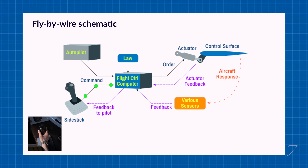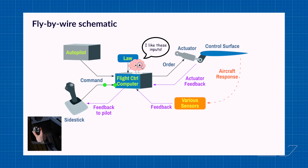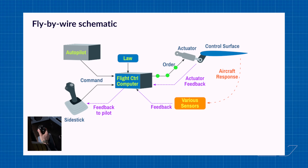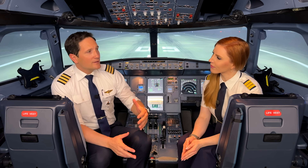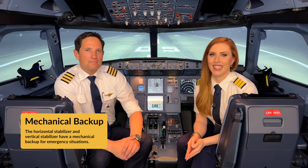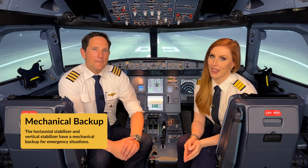The pilot's inputs are converted to an electronic signal and then sent to multiple flight control computers. The computers interpret the pilot's input, check whether it is within operational limits, and then send a signal by wire to the hydraulic actuators that move the surfaces. The resulting change in attitude is sent back to the computers as feedback. The rudder and horizontal stabilizer are also controlled mechanically, but more on that later. Let's look at the cockpit controls of the Airbus A320.